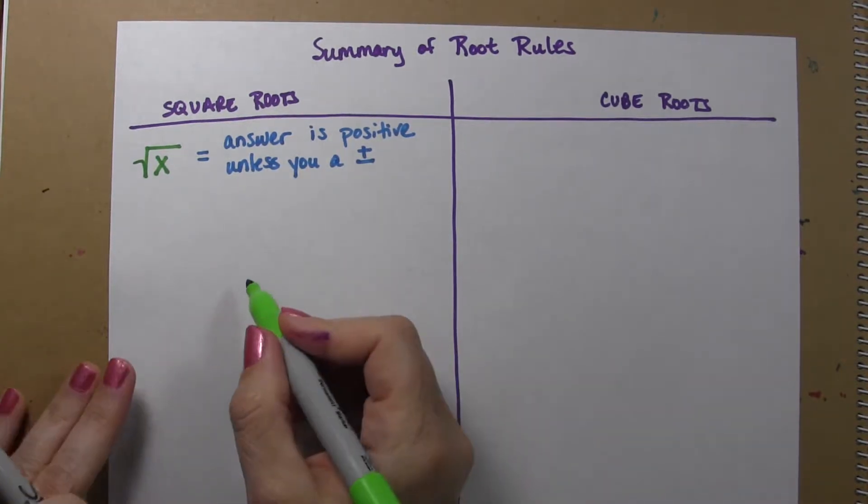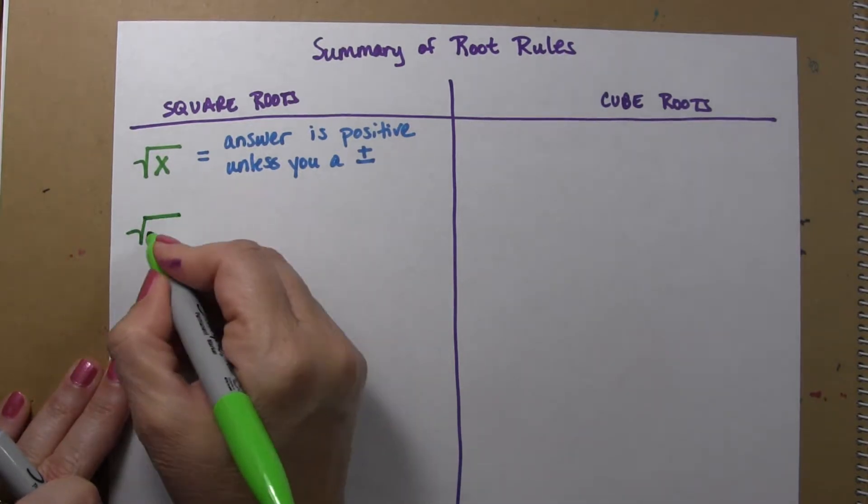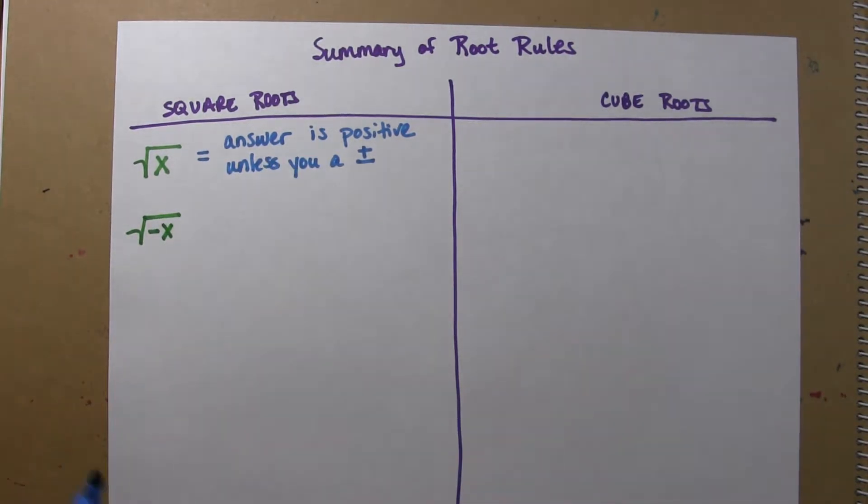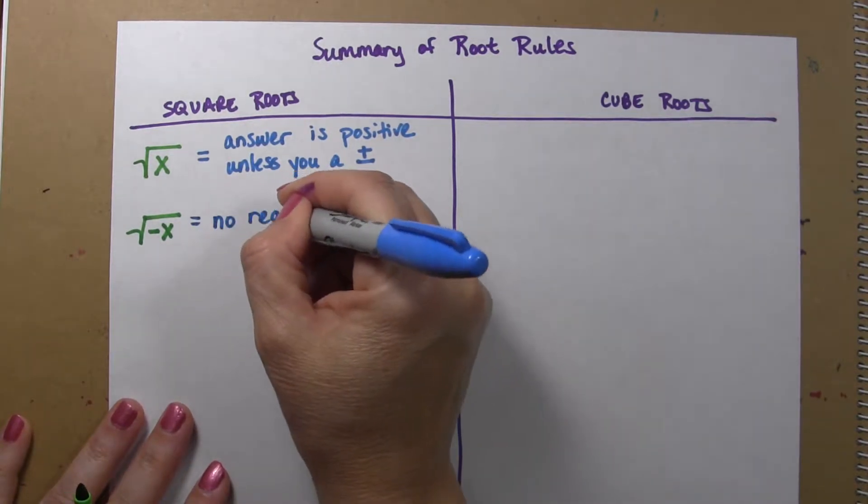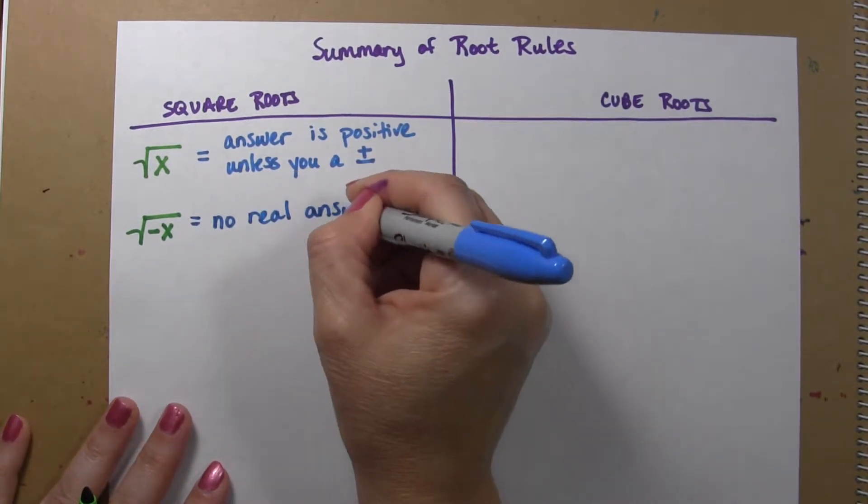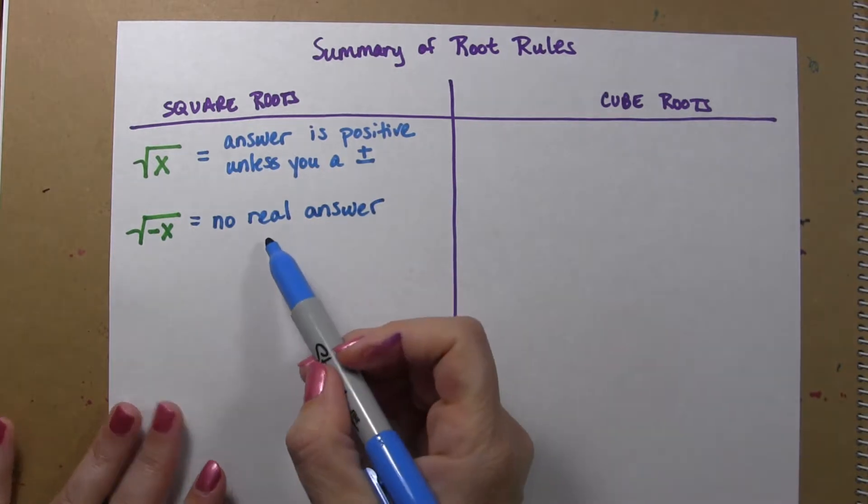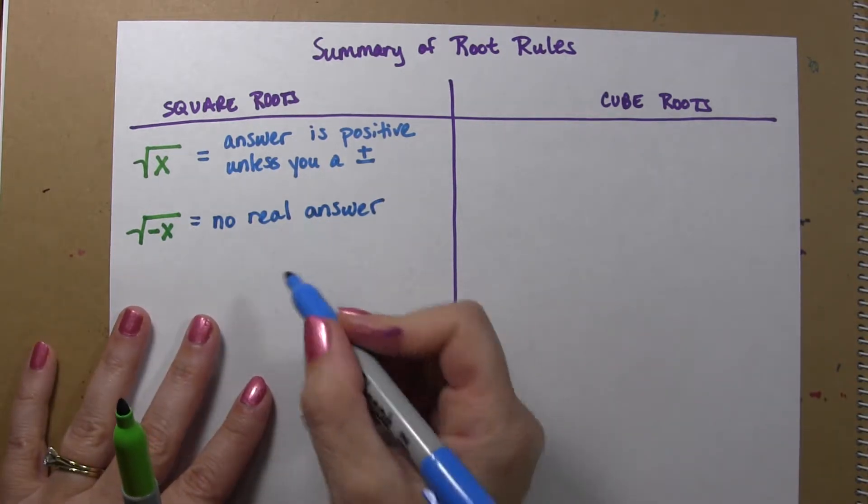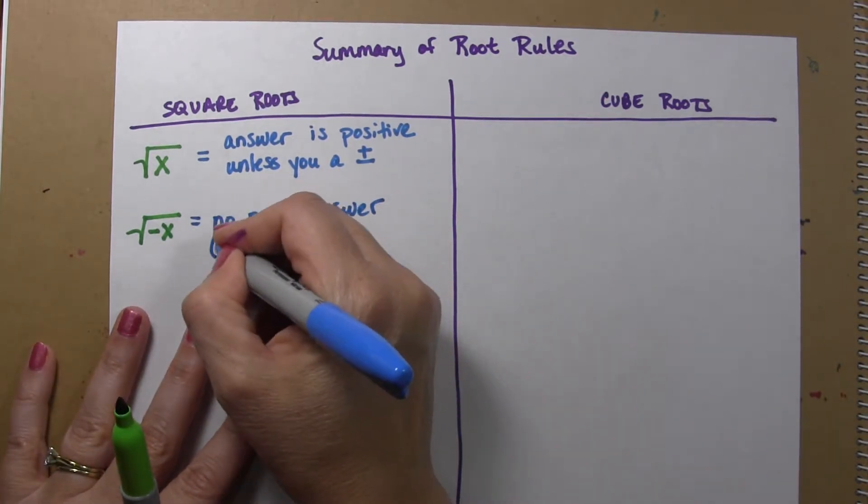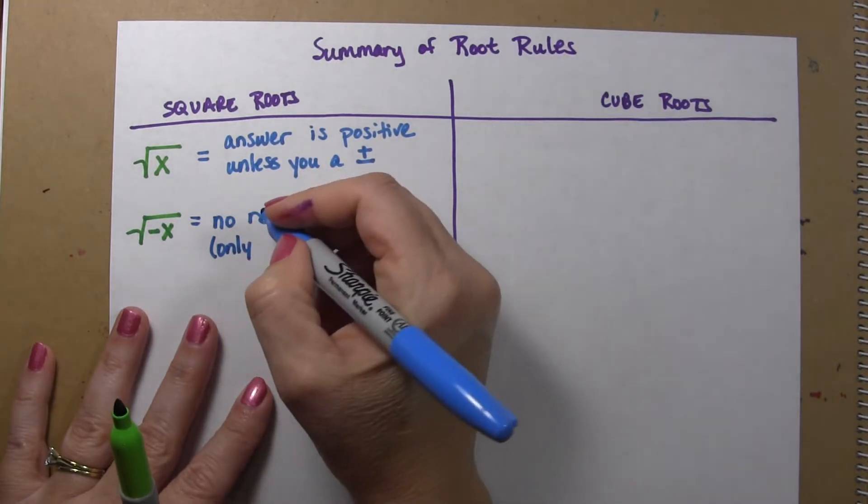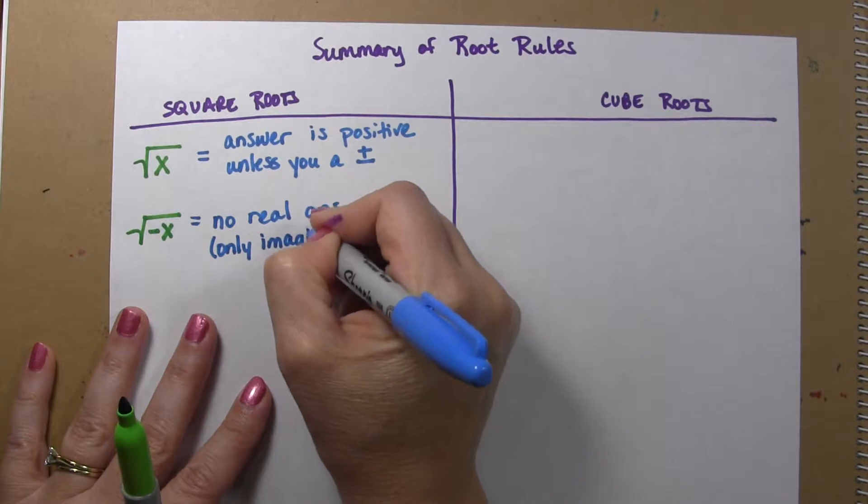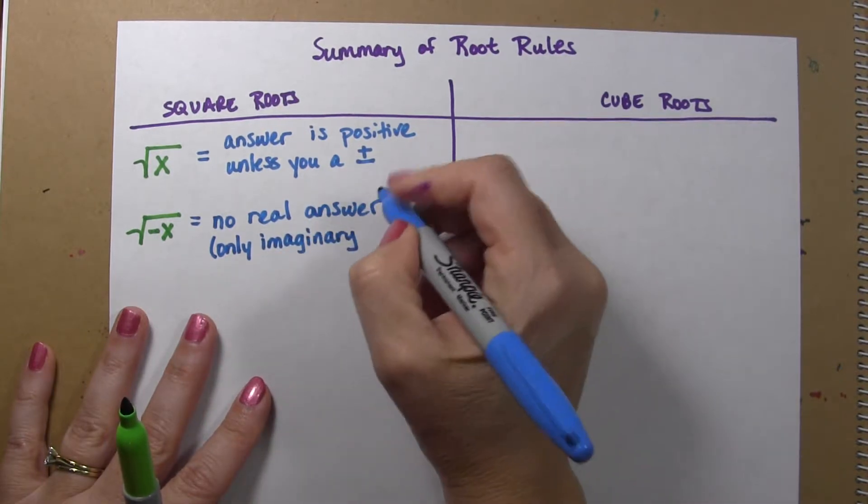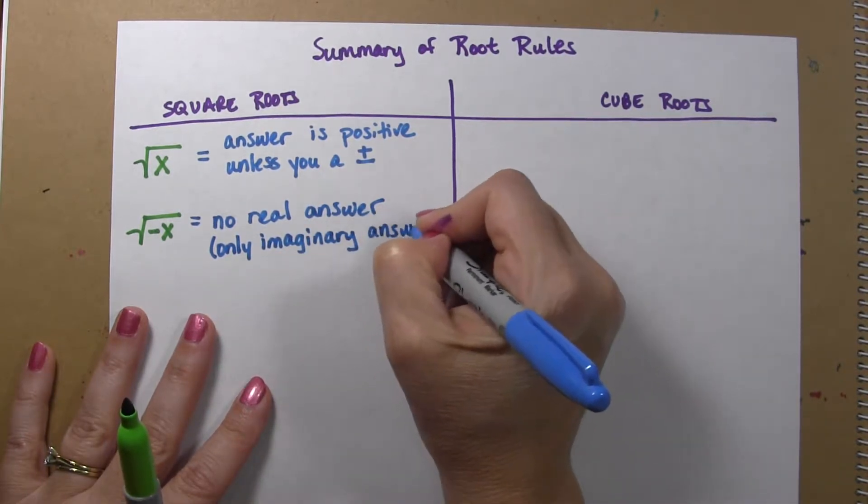We also know that if we are taking the square root of a negative number, there is no real answer for this. And I mean real in the mathematical sense.